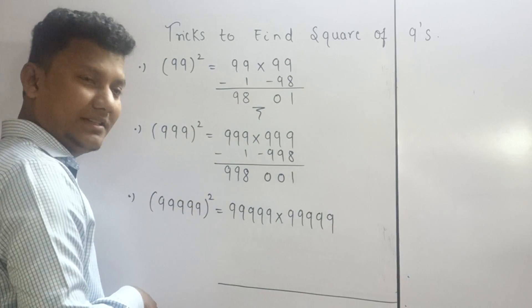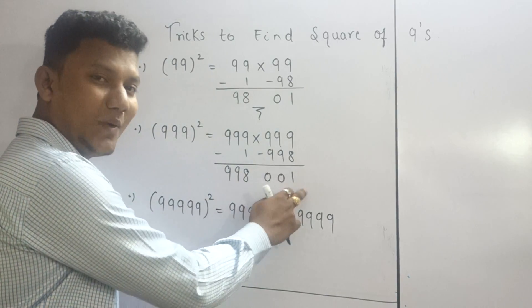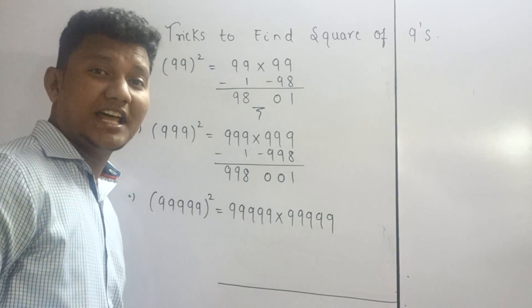Triple 9 square is 998001. Understood? Second example. Move on to the last one.